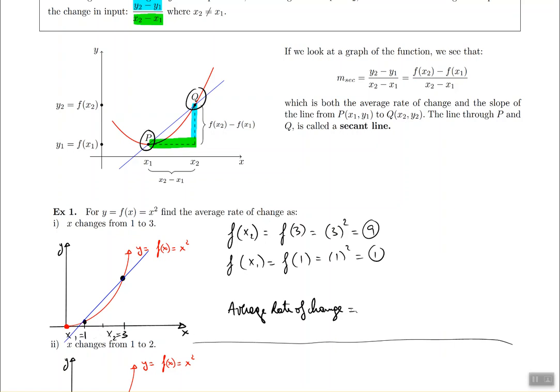So now what is the average rate of change? It's basically f of the x2 minus f of the x1 divided by the x2 minus x1. So in other terms it's 9 minus 1 divided by 3 minus 1. So this is 8 divided by 2 which is going to be 4. So the rise over the run in this case is equal to 4. So the slope of this line is equal to 4.